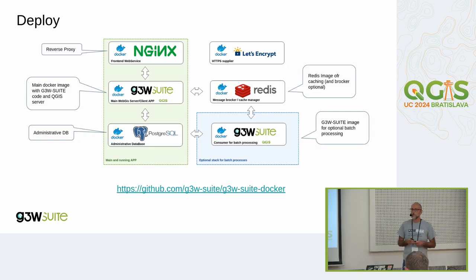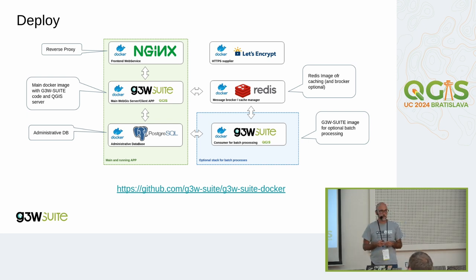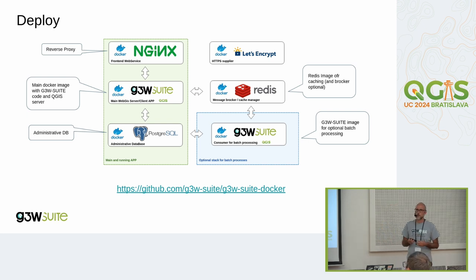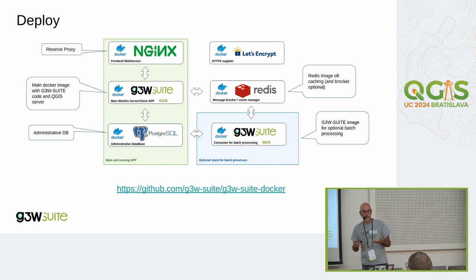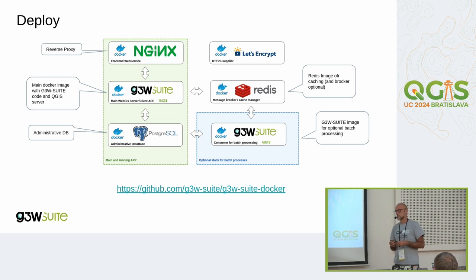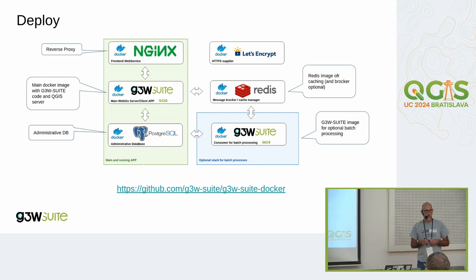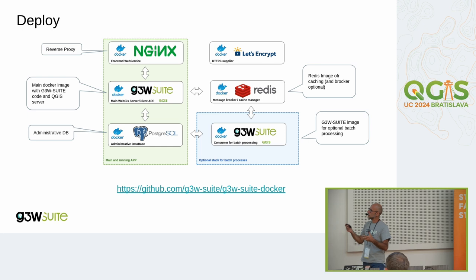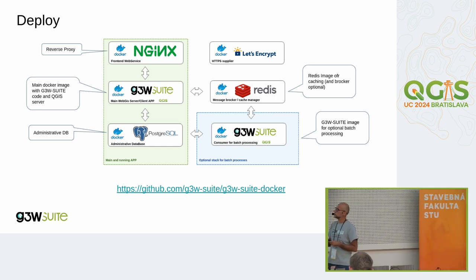G3W-Suite is a Django application. You can deploy it as a standard Django web application, but the most modern way is to use Docker and Docker Compose. In this slide I show you how it is possible to deploy G3W-Suite today.